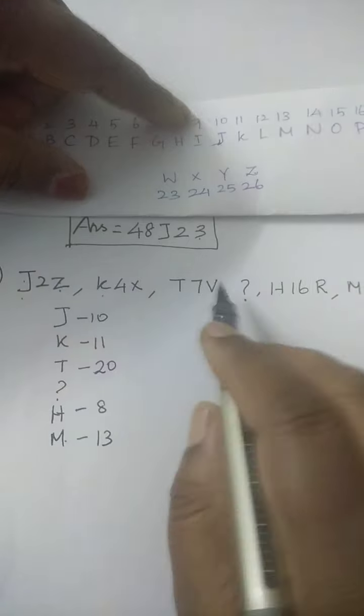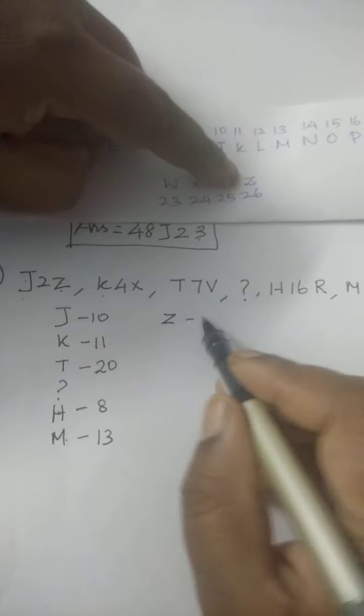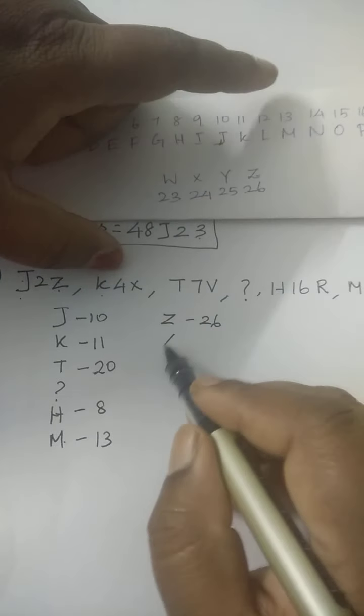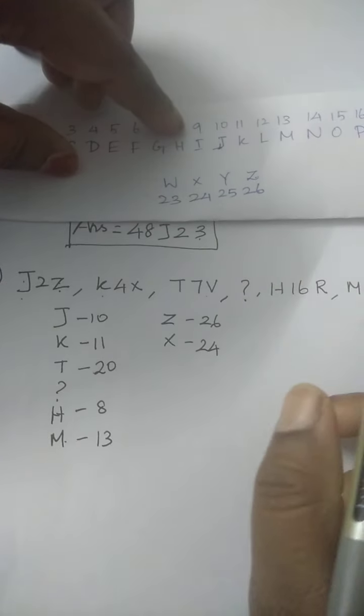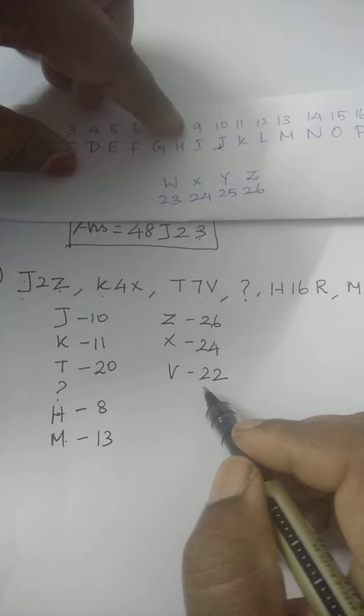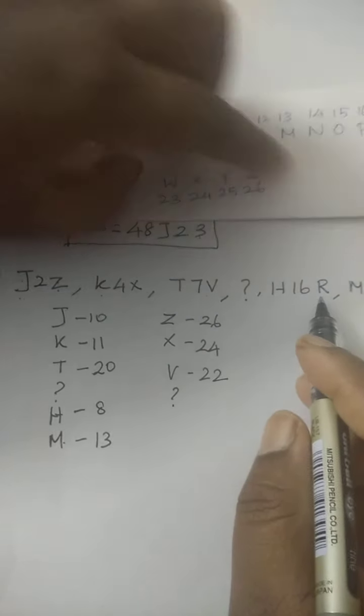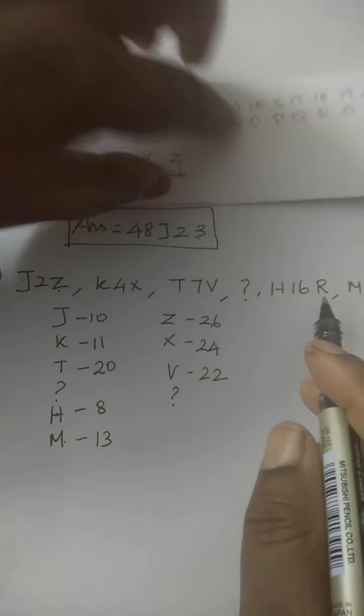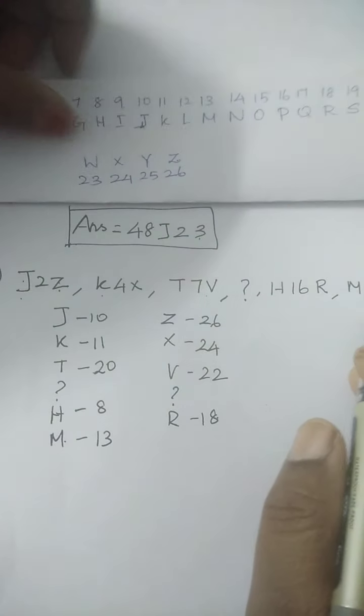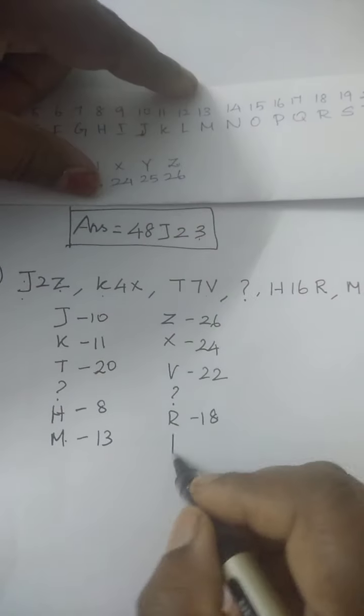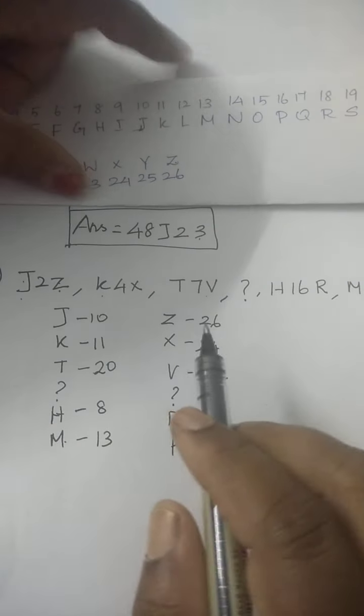So write down all the elements, all alphabets. I am writing the third element of every series. J is, just to compare, J, Z as 26, X is 24, then V, V is 22, then question mark, then R, R is 18, then P, P is 16. So I write down the alphabets. Now we are going to compare the adjacent alphabets.